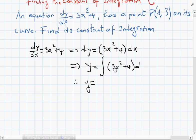It's going to give us y equals... we'll keep the 3 and integrate x² which gives us x³/3, plus the integration of a constant gives us a constant times x, and then plus C. That's the C we're looking for.